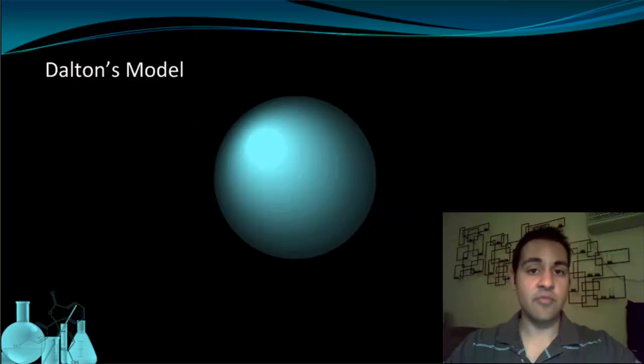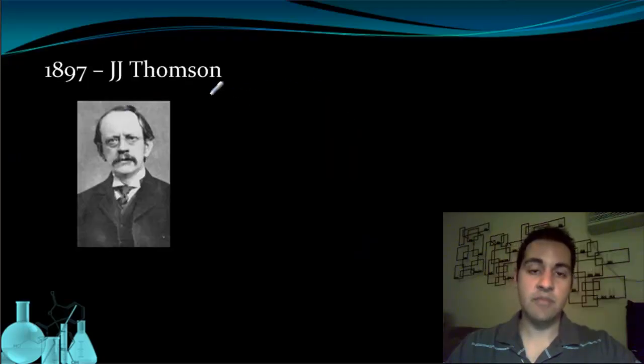To recap where we left off, we so far know that from Dalton's five points of his atomic theory, the model of the atom is a solid sphere that has no features. Almost 100 years later, J.J. Thompson, a physicist, was performing experiments with cathode rays.